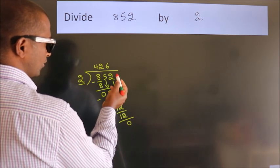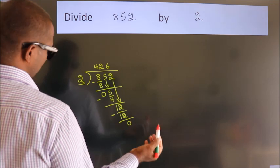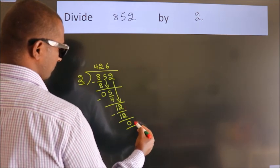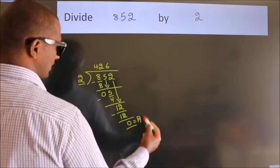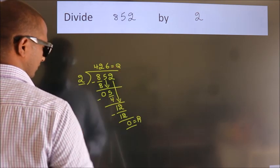After this, no more numbers to bring it down. So we stop here. This is our remainder. This is our quotient.